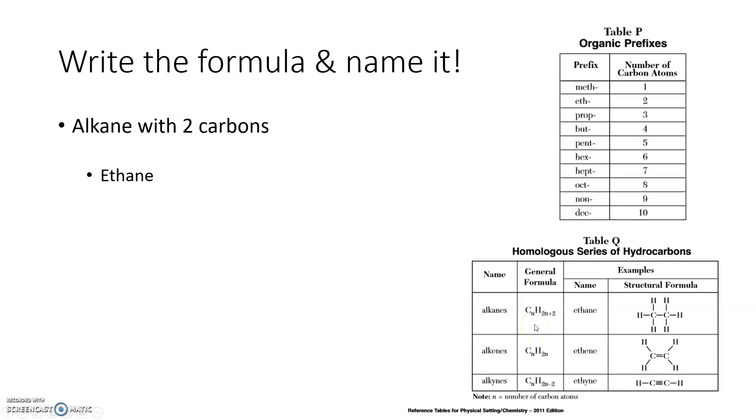Well then how do I figure out his formula? Using this general formula here, since I know that carbons, there's only two of them, that's the n that I plug in right here. So I know he's going to be C2. Then put that two for this n also. So two times two, four, plus two is six. This guy's formula is C2H6.